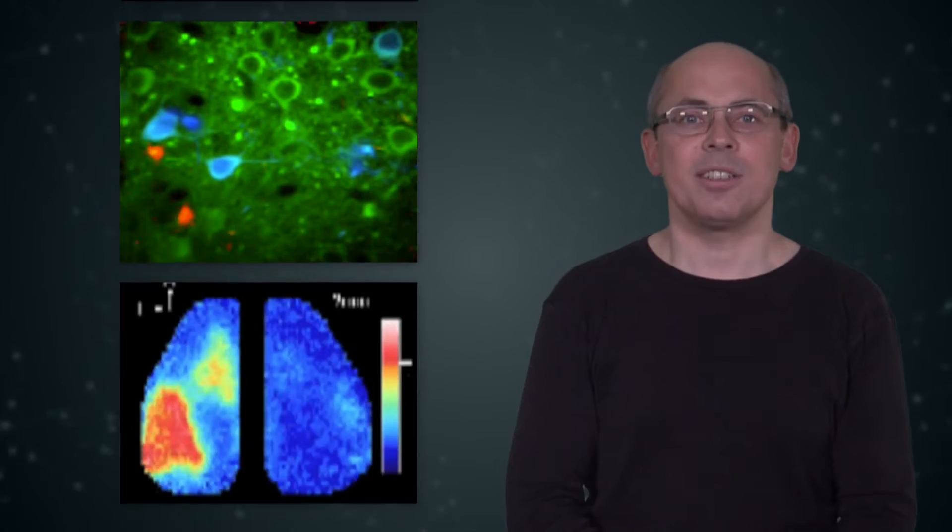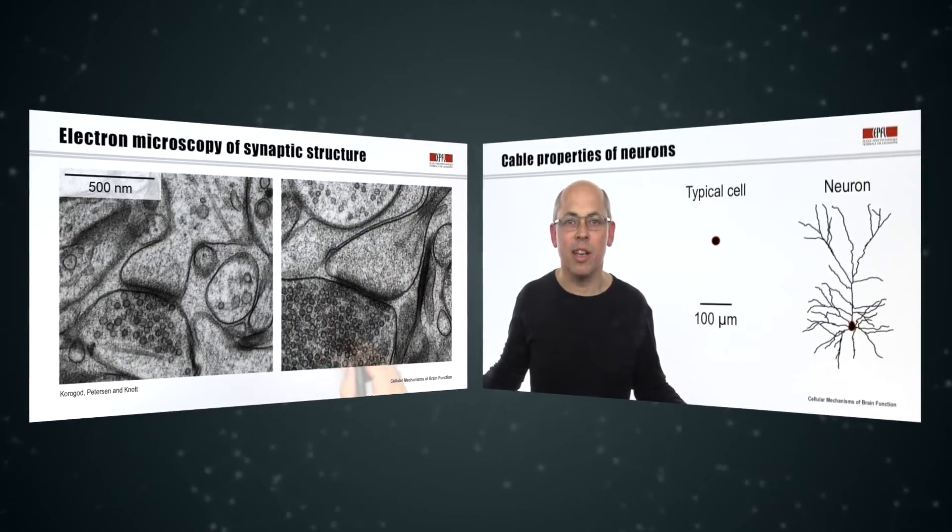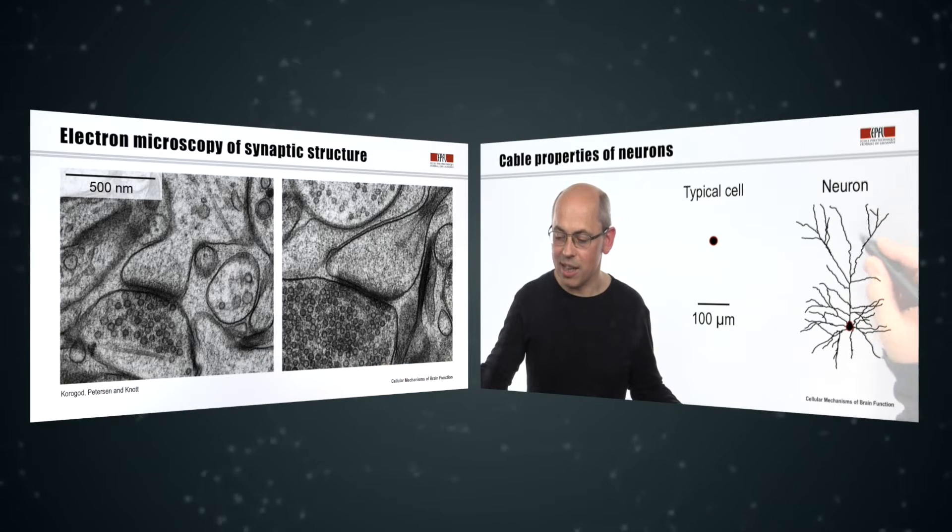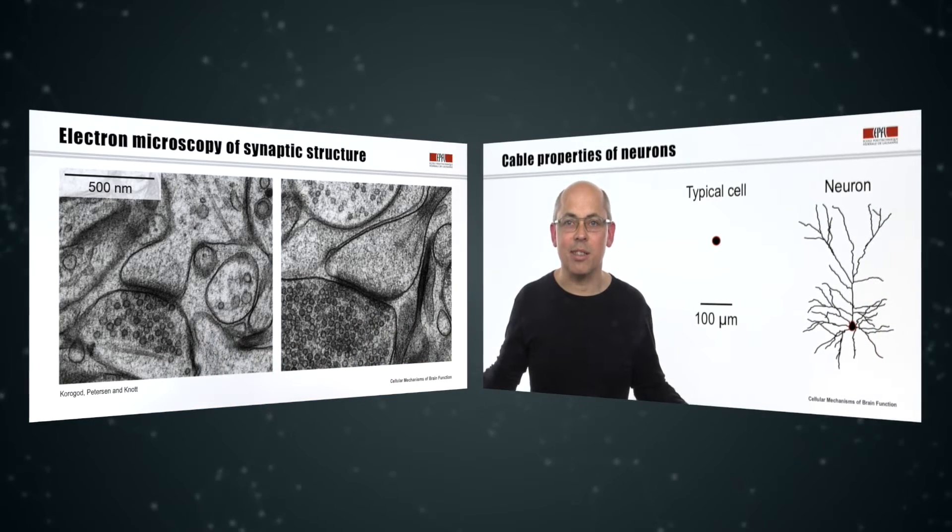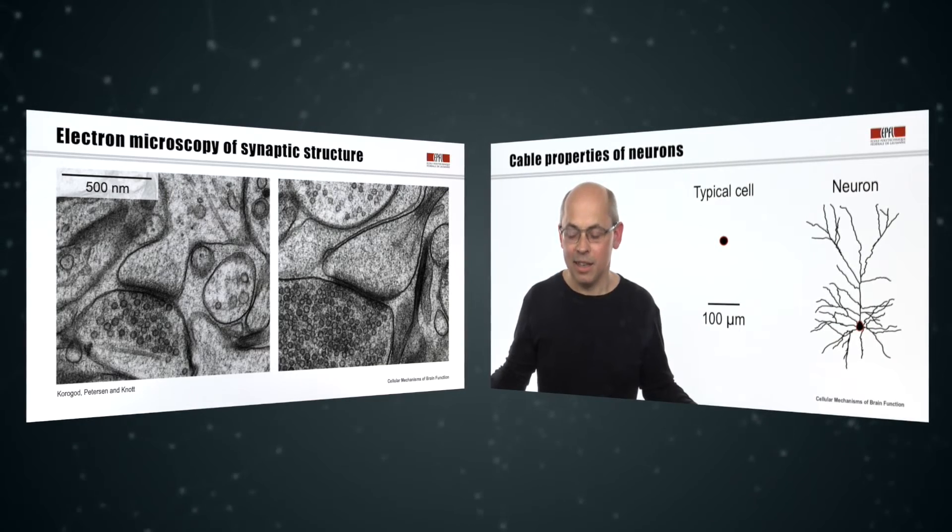Here in this course, we'll take a bottom-up approach to studying the brain. We begin with a biophysical description of the structure and function of the fundamental building blocks of the mammalian brain, its synapses and neurons.